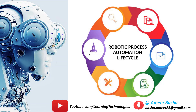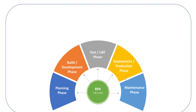These RPA tools help organizations rapidly create and scale attended and unattended automations. In this session we will learn what the different phases or stages involved in the RPA life cycle are. RPA brings together people, process, technology, and information towards effective digital transformation. Overall, there are five crucial stages: the Planning phase, Build or Development phase, Test or UAT phase, Deployment or Production phase, and finally the Maintenance phase.